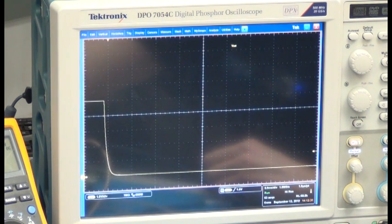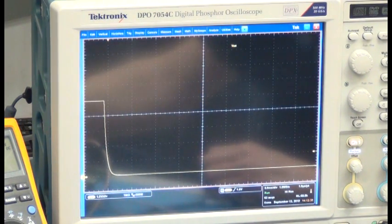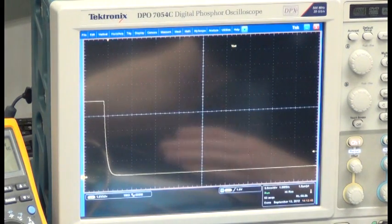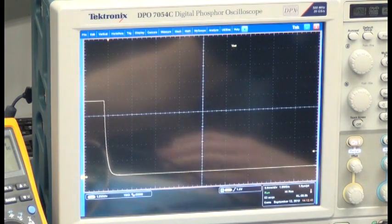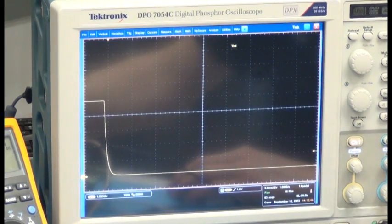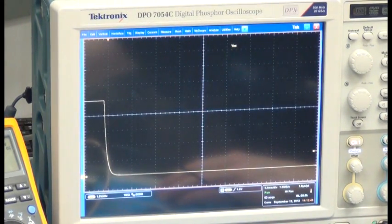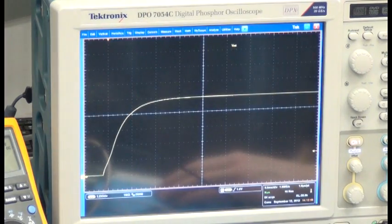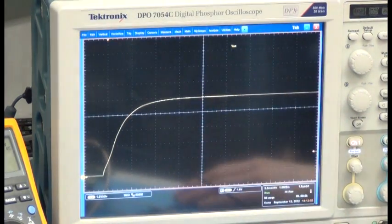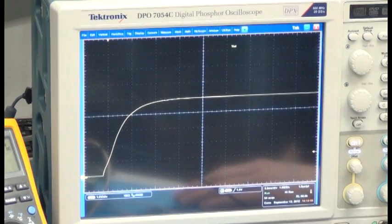And finally, I will set the load to a constant current mode. So, the electronic load is set right now for 6 amps constant current, and I'll apply 28 volts to the input of the converter, and we'll see it turn on into constant current load. And again, we see a nice soft start waveform with no overshoot.